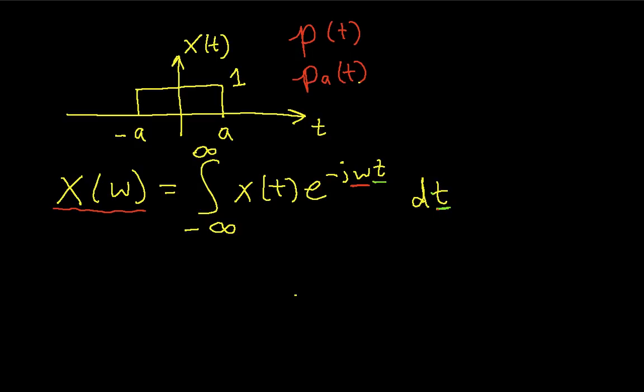And this is a fairly easy function to integrate for the following reason. If you look at values of t between minus a and a, so between here and here and here, the function has a value of 1. So I can actually just write this as 1 times e to the minus j omega t.